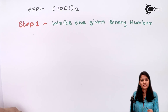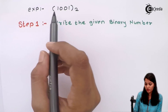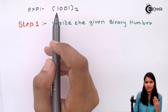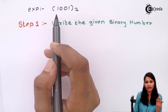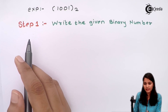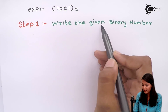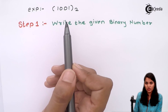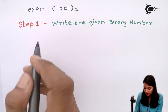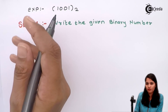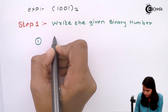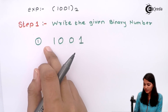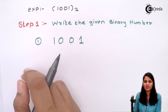Let's take an example: we have to convert the binary number 1001 into a decimal number. I will explain the steps one by one. The first step is to write the given binary number. So our example is 1001. We have written our given binary number; now let's move to the next step.